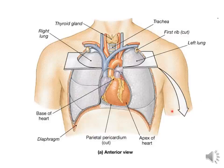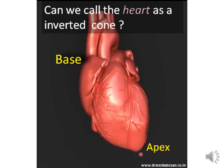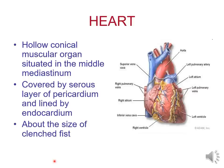This center of the thoracic cavity where the heart is located is also called the mediastinum. There are two other main parts of the heart you should know: the apex of the heart and the base of the heart. To summarize, the heart is a hollow cone-shaped organ made of muscles and is situated in the middle mediastinum in the thoracic cavity.